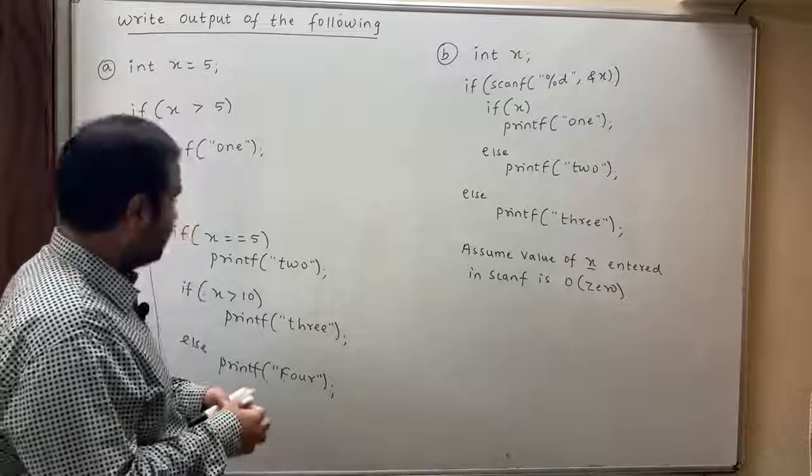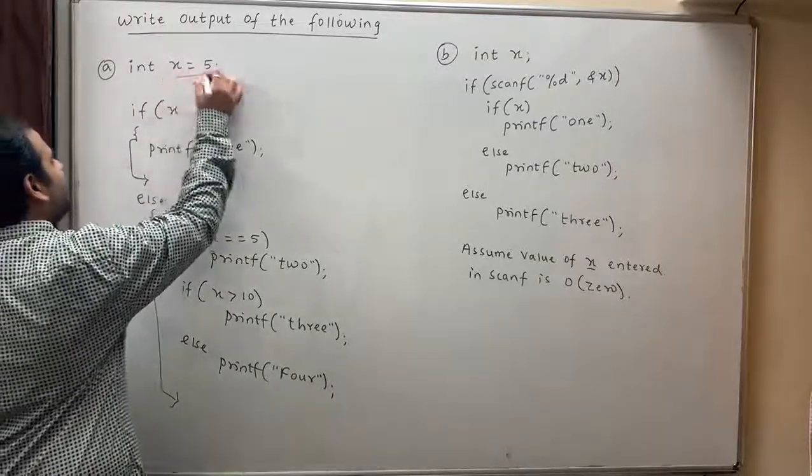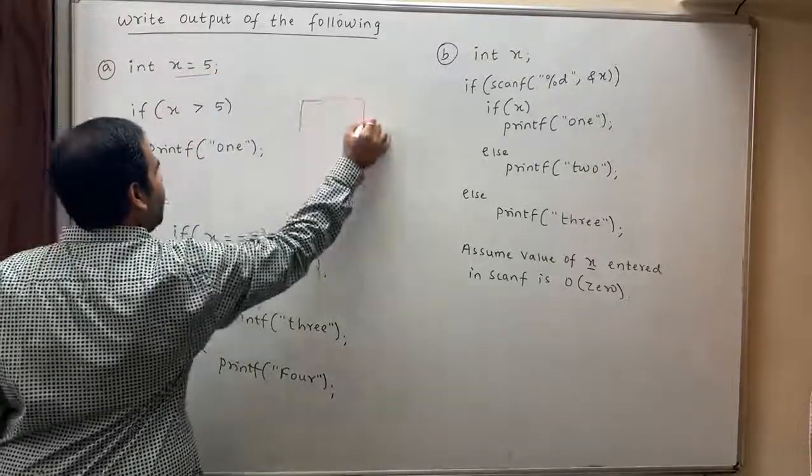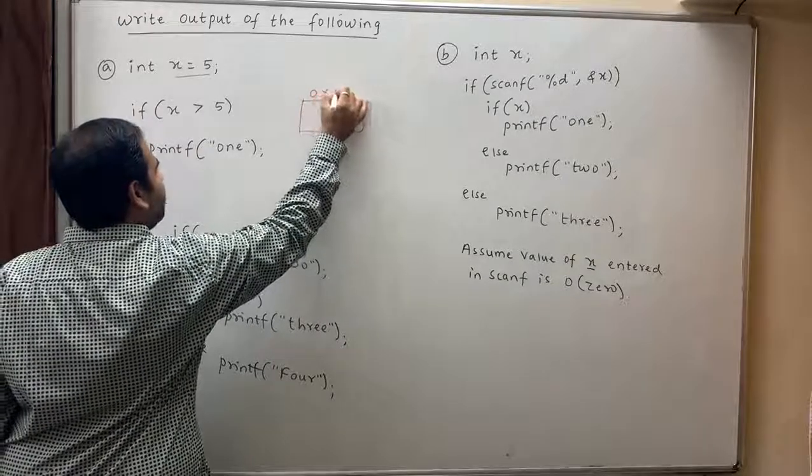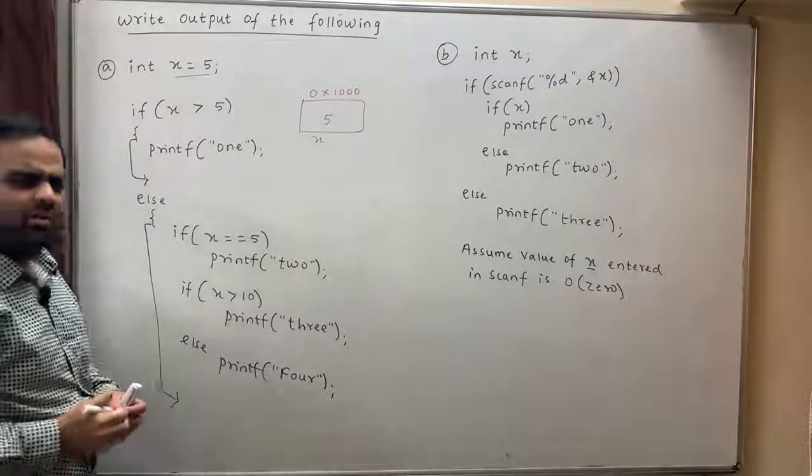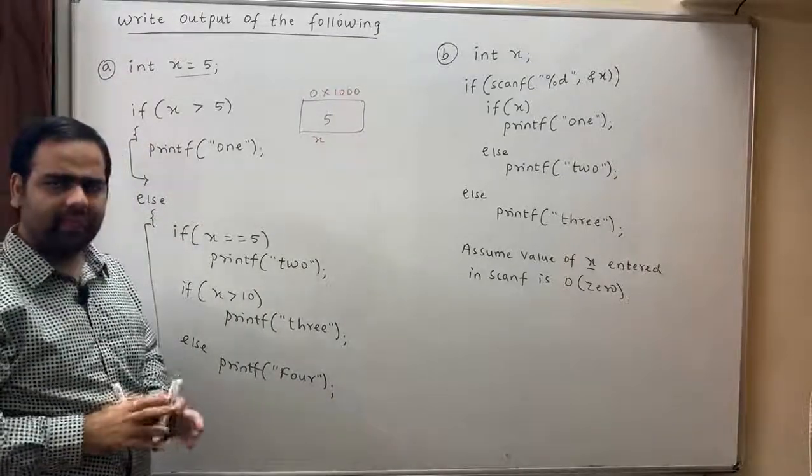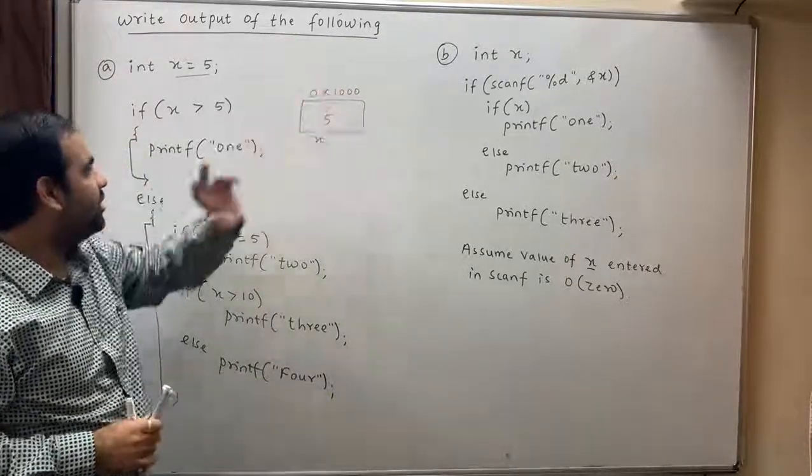Let's see the output of this. I say int x equals 8. This is the variable x whose value is 8. Let the address of this variable be say 0x10000. You can assume any address that you like and 0x means it is hexadecimal.